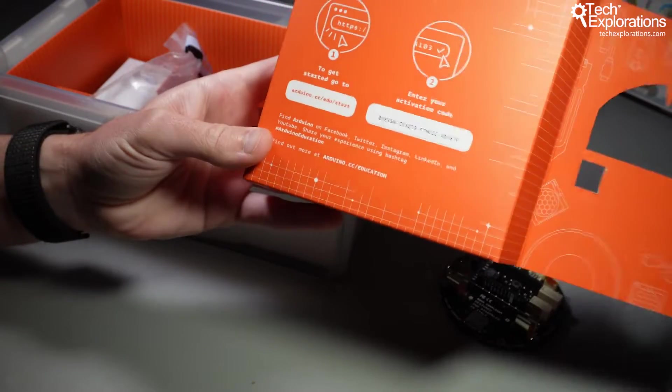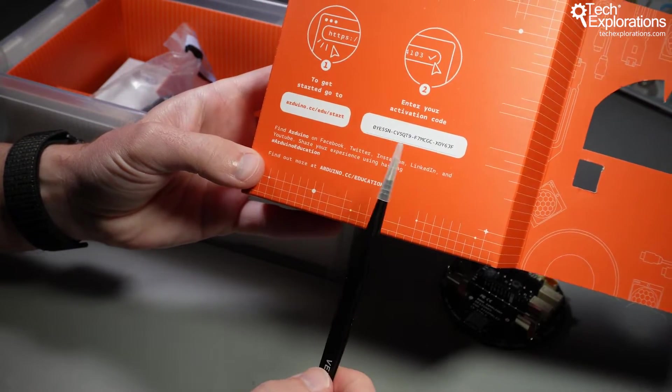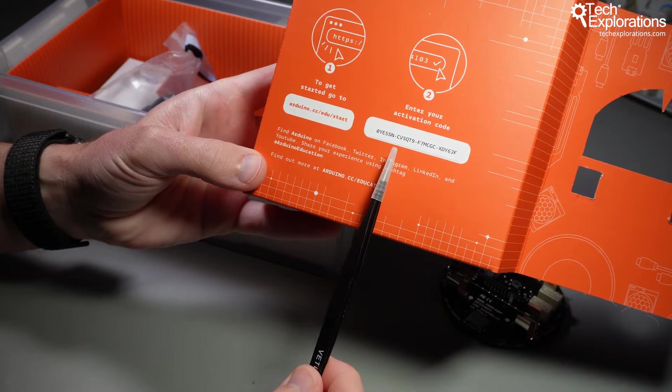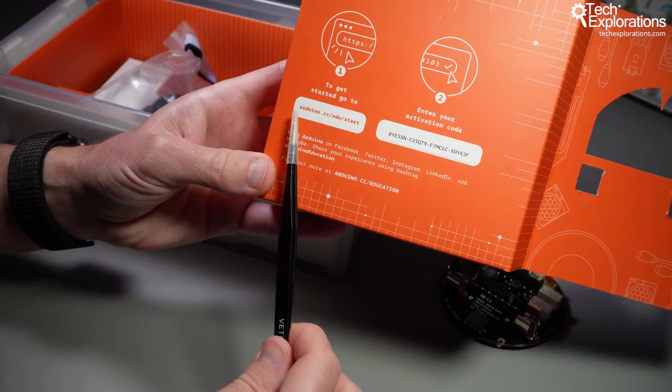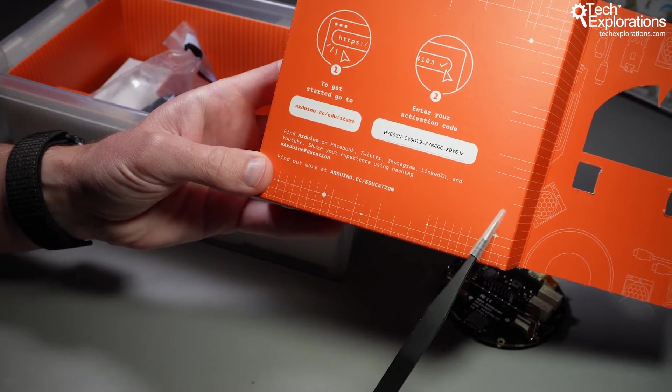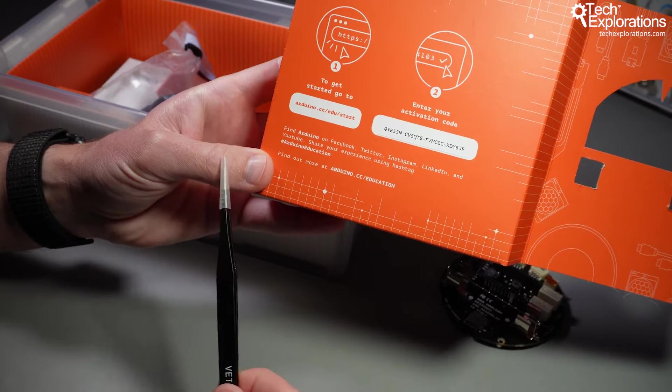Also in the cardboard at the top of the kit, you see the activation code for your Arduino course. You can go to Arduino.cc/edu/start and type in this activation code to get access to educational material, which is very nice.